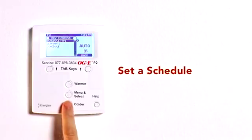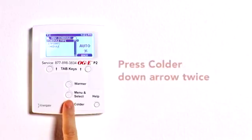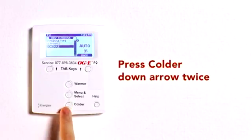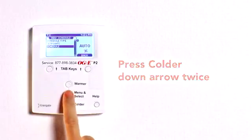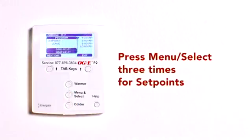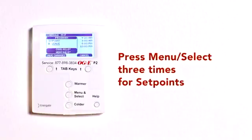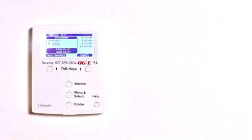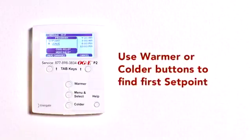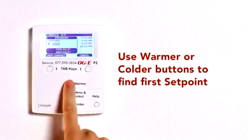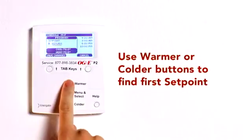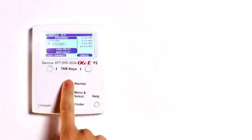Now let's look at setting a schedule. Press the colder down arrow twice to access the schedule screen. Press the menu select button three times to access the set points. You'll see the selected set point underlined. Using the warmer or colder buttons, find the first set point of the day — usually that set point will be wake.